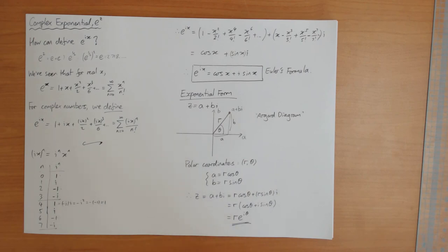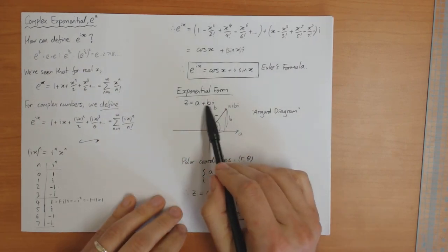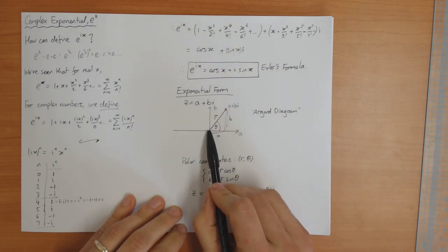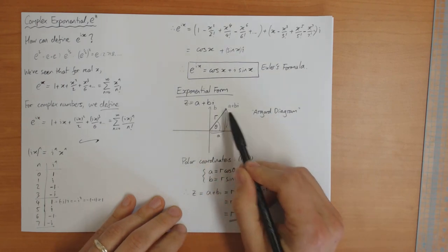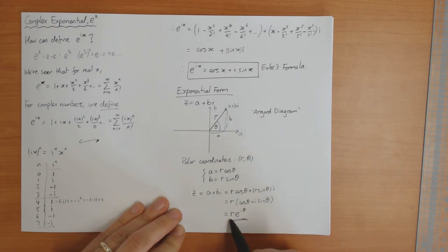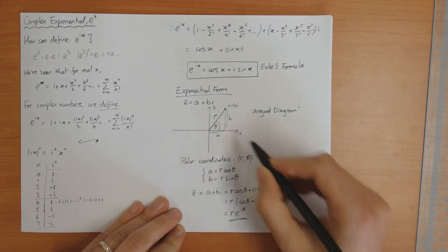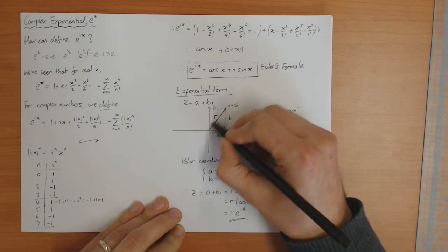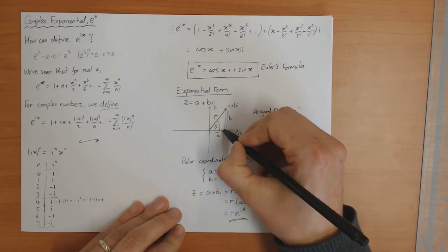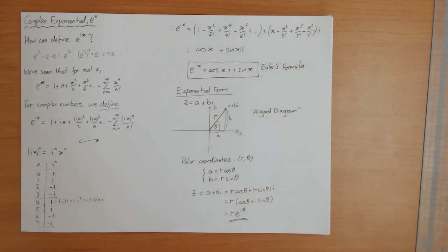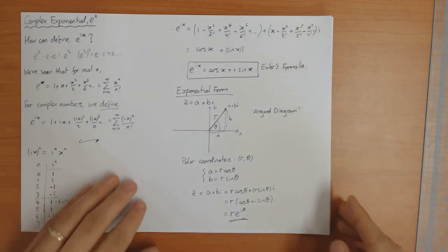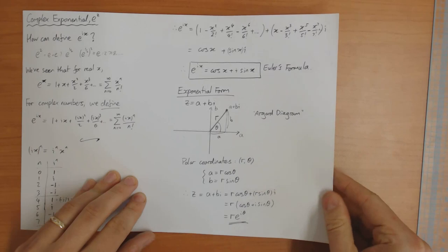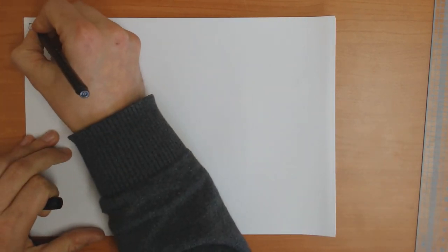This gives you another way of writing a complex number. Instead of writing it in a plus bi form — the Cartesian form — you can write it as r times e to the i theta, where r is the length of the line (called the modulus of the complex number) and theta is the angle. Let me do some examples of this and then define some useful terms. Examples of exponential form: